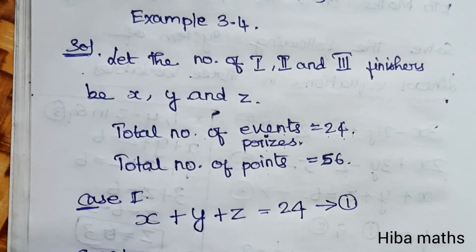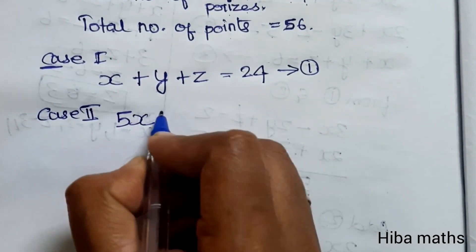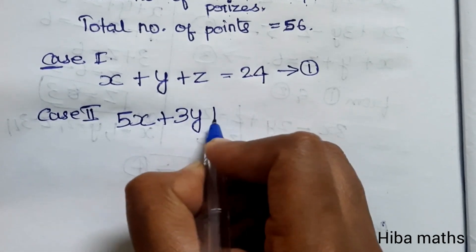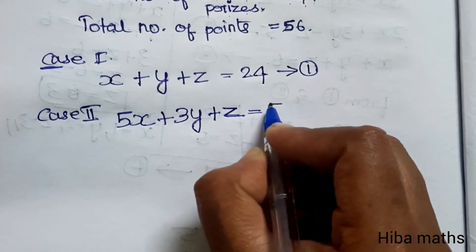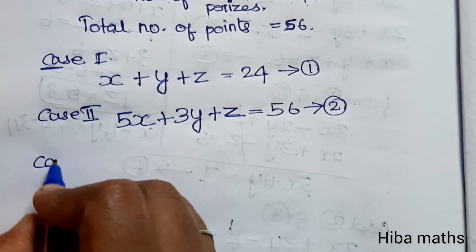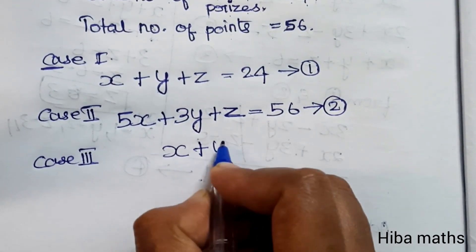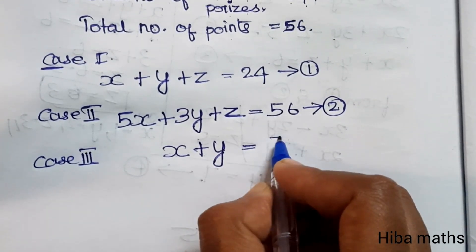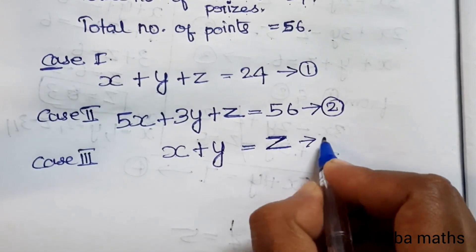For case 3, the third-place finishes equal the combined first and second place finishes, giving us x plus y equals z. This is the third equation.